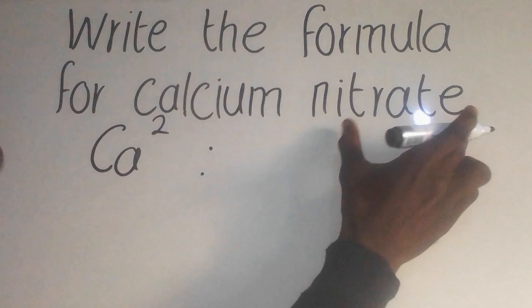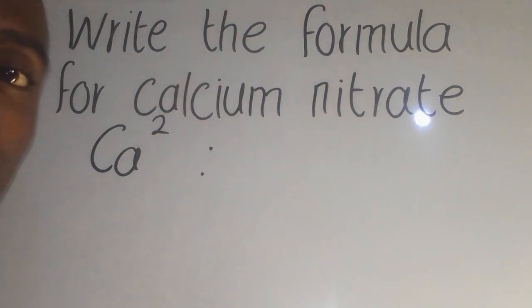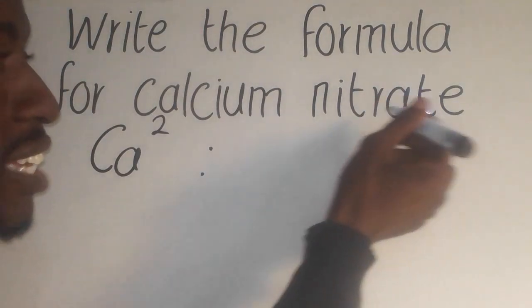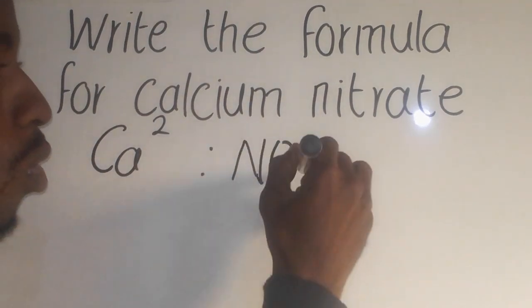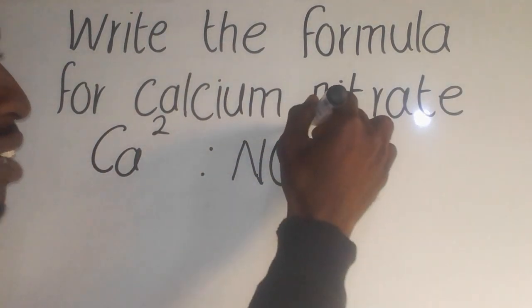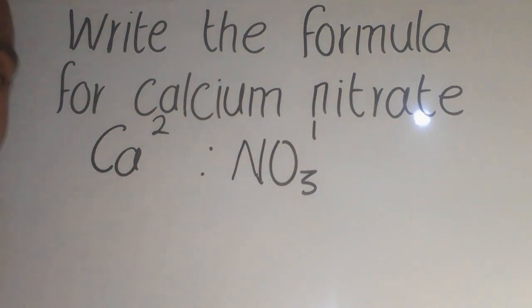Now, how about the nitrate? Nitrate is a radical. A radical is a molecule that has its own valency. Nitrate is being represented by NO3 with a valency of 1 there.